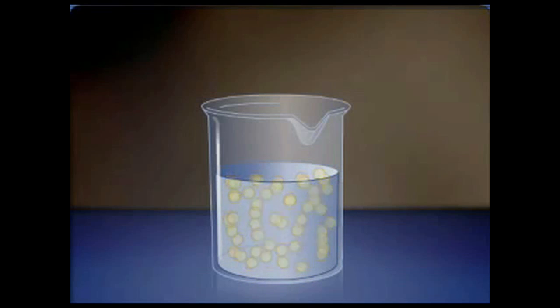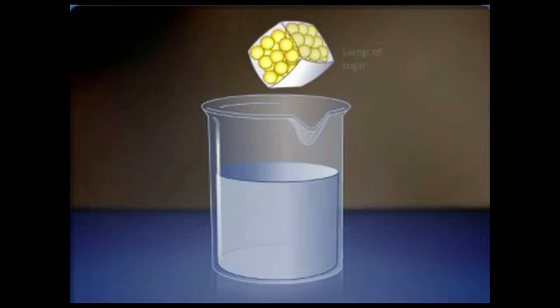Let's start with a beaker of plain water. What will happen if we now add a lump of sugar to the water? A lump of sugar is composed of many individual sugar molecules, and even as a solid lump, the individual sugar molecules are in motion.